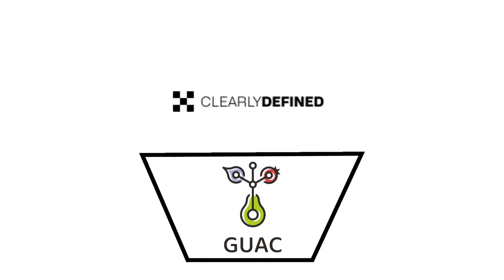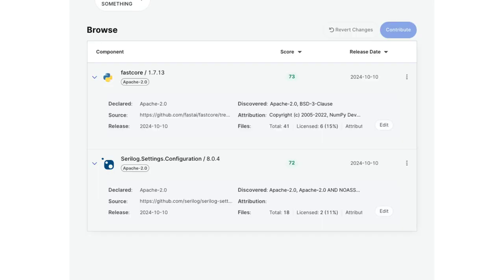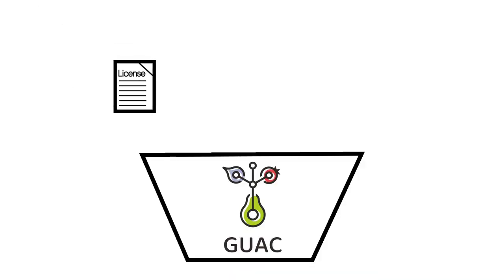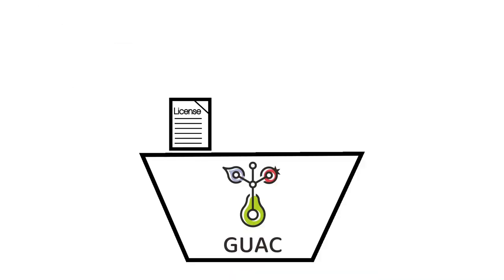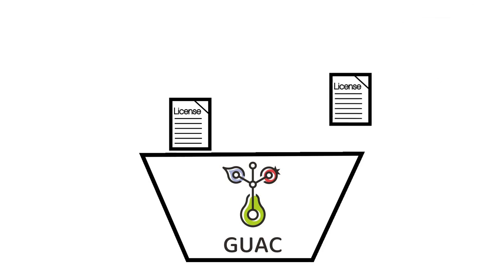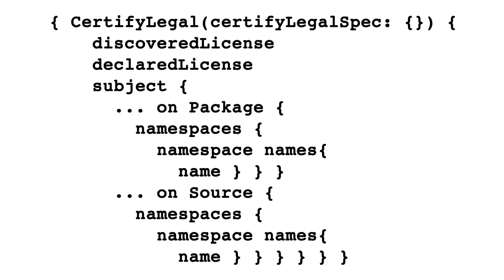GWAC enriches your SBOMs with content from reliable sources like Clearly Defined, a database of license information curated by experts. GWAC ingests both the declared license — what the project claims — and the detected license — what license scanners find in the source code.